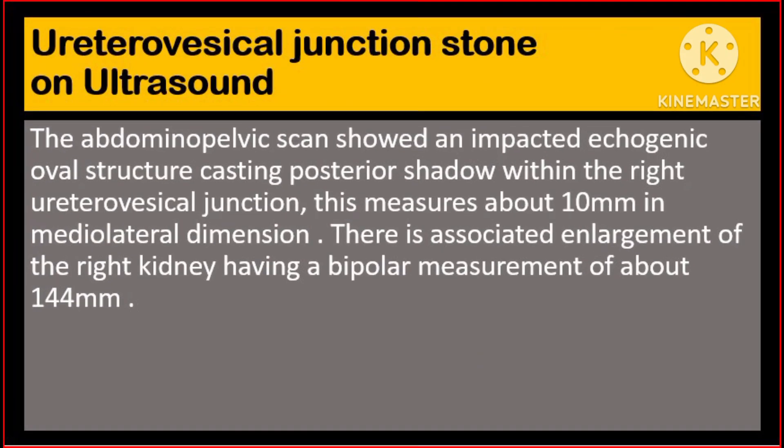Ureterovesical junction stone on ultrasound: the abdominal pelvic scan in our case today showed an impacted echogenic oval structure casting a posterior shadow within the right ureterovesical junction. This measures about 10 mm in mediolateral dimension. There is associated enlargement of the right kidney having a bipolar measurement of about 14.5 cm.